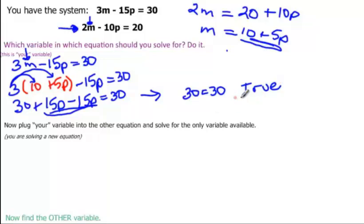It is true that 30 is equal to 30. So that really tells us that all points, both these lines have all points in common, or they are the same line.